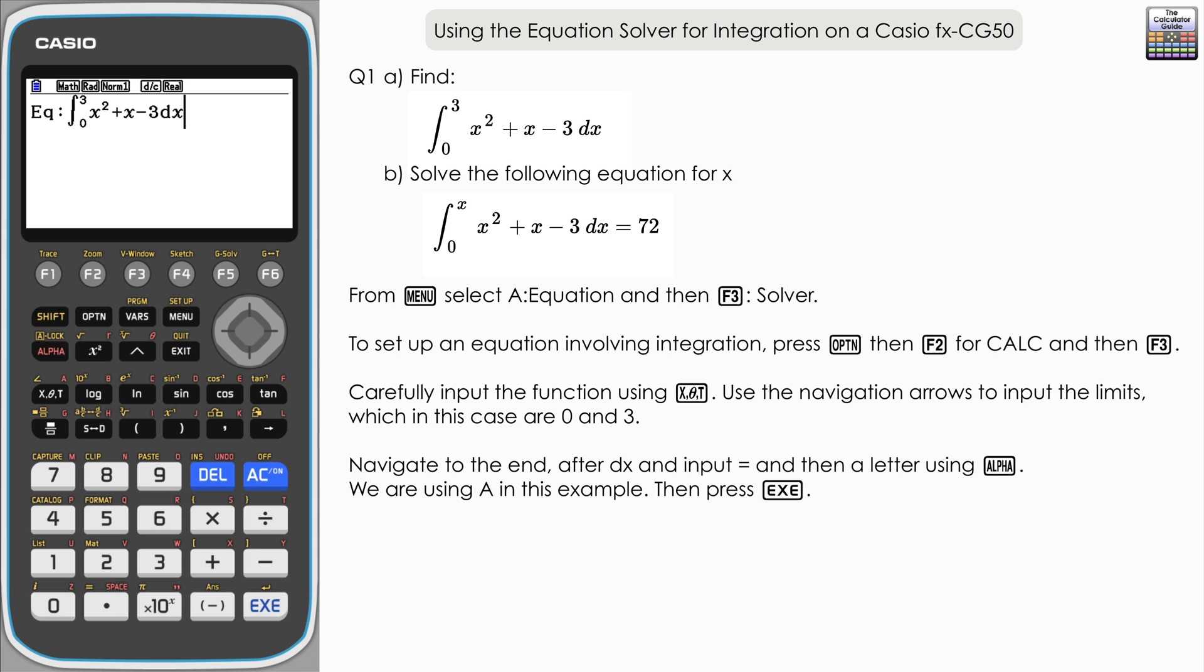If we were using the run matrix mode, we could press execute at this point and find the value. It's slightly different here in equation solver. I'm going to set it up differently using a letter so we can use different values or a variety of solutions. We need an equals sign, which we can access with shift and equals, and then I'm going to input alpha and A. Press execute.